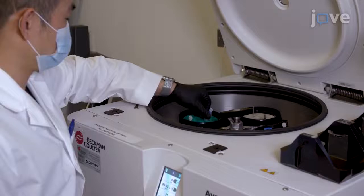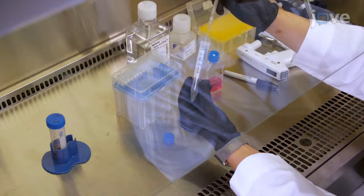Centrifuge the sample at 400 times G for 5 minutes. Then discard the supernatant without disturbing the cell pellet. Resuspend the pellet with 1 milliliter of pre-equilibrated B cell expansion medium.